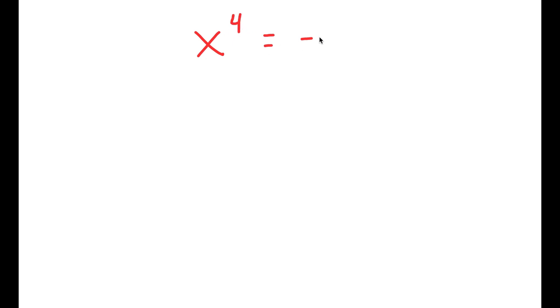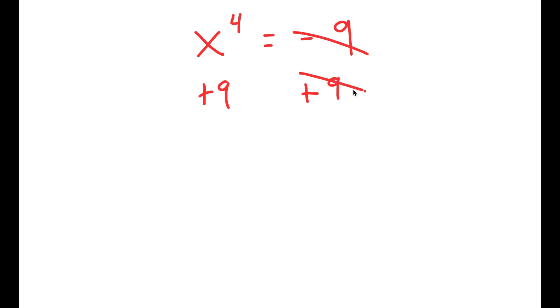Alright, so in this video I'm going to solve the equation x to the power of 4 is equal to negative 9. To solve this, I'm going to first start by adding 9 on both sides. So these two cancel out, and I get x to the power of 4 plus 9 is equal to 0.